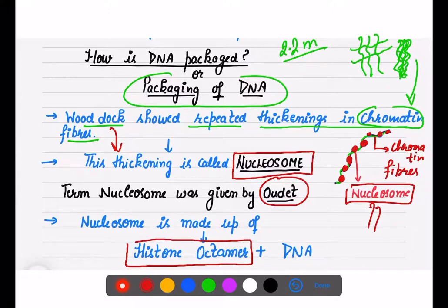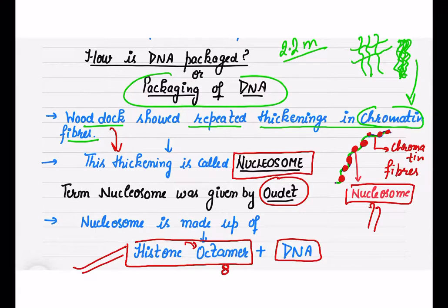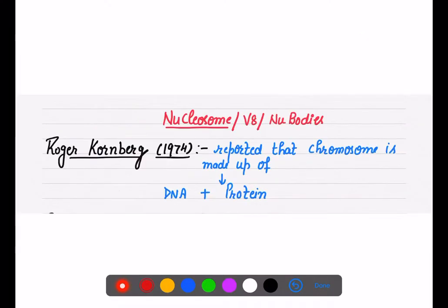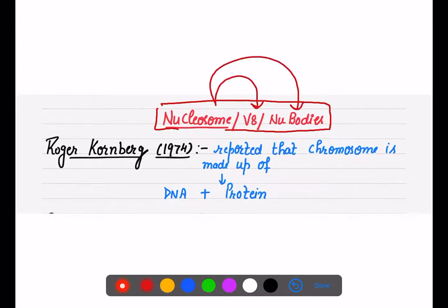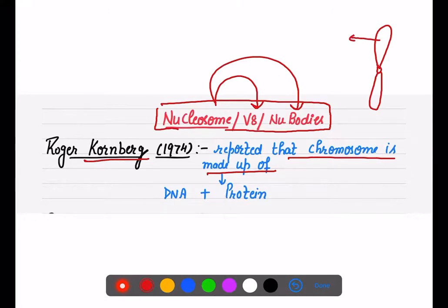Nucleosome is made up of a histone octamer plus DNA. The term 'octamer' tells you there are 8 units. Roger Kornberg reported that chromosomes are made up of DNA plus proteins. So a chromosome is made up of DNA and proteins.